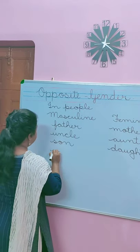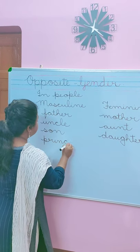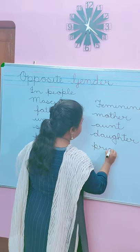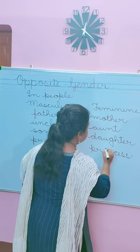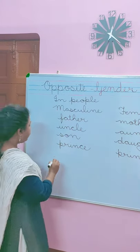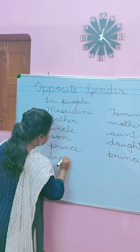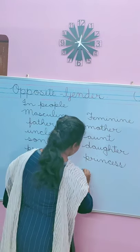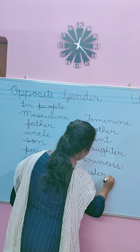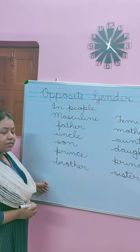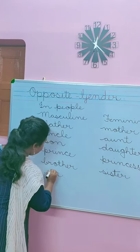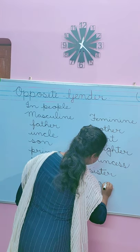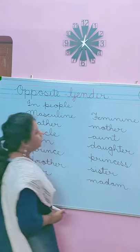Masculine — prince, P-R-I-N-C-E — and feminine — princess, P-R-I-N-C-E-S-S. Masculine — brother, B-R-O-T-H-E-R — and feminine — sister, S-I-S-T-E-R. Masculine — sir, S-I-R — and feminine — madam, M-A-D-A-M. Let's read, children.